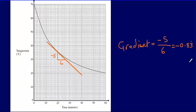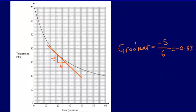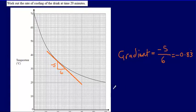So negative 0.83 recurring. And when asked what is the rate of cooling here, what I can say is the temperature is decreasing at 0.83 degrees centigrade per minute, so I would say that the rate of cooling is going to be 0.83.